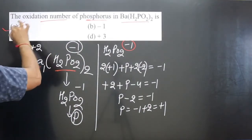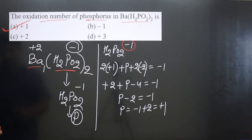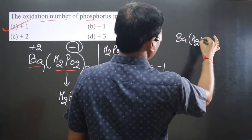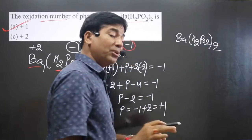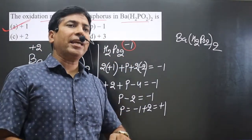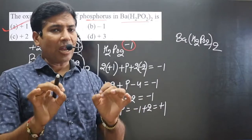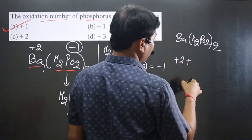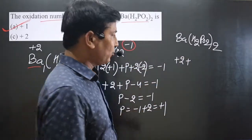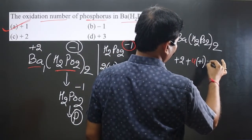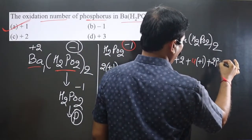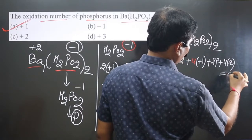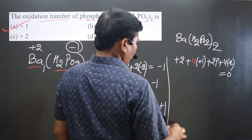Directly, you can also calculate the oxidation number using the full compound. We have barium (H₂PO₂)₂. Barium is a second group element and always shows a +2 oxidation number. So: +2 (barium) + 4 hydrogens each +1 + 2 phosphorus atoms (unknown) + 4 oxygens each −2 = 0.